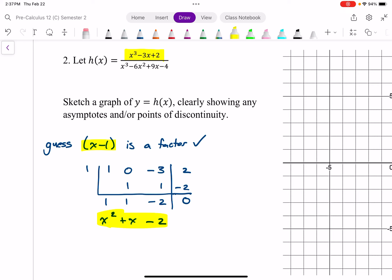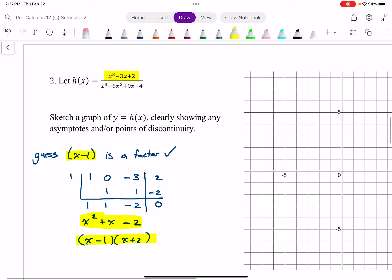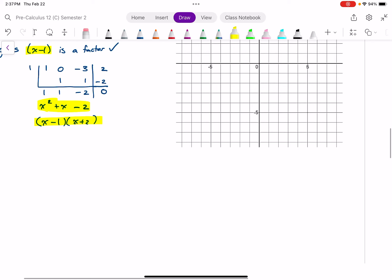So x minus 1 is part of that numerator. This is what's left. This is a quadratic function. And quite often, I can factor it by just looking at it. And I can. Two numbers that multiply to negative 2 and add to positive 1 are negative 1 and positive 2. Which means the fully factored form of my numerator is a factor of x minus 1 twice and x plus 2.